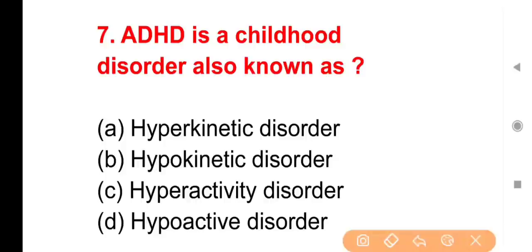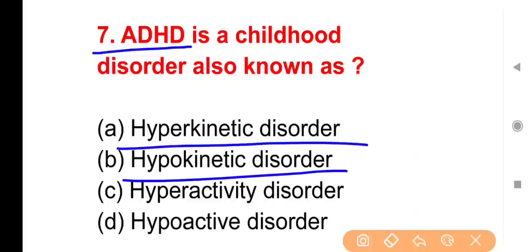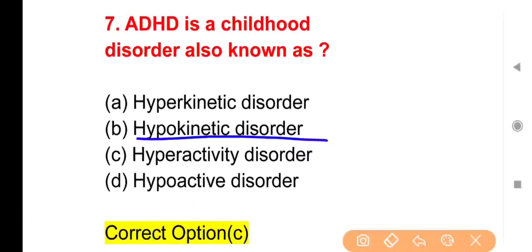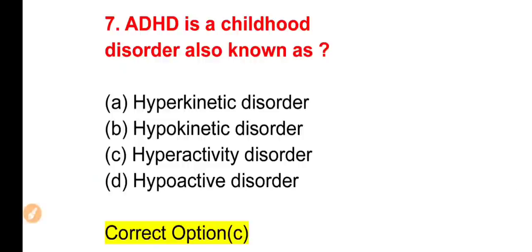Next question: ADHD (Attention Deficit Hyperactivity Disorder) is also known as — Option A, Hyperkinetic Disorder; Option B, Hypokinetic Disorder; Option C, Hyperactivity Disorder; Option D, Hypoactive Disorder. The right answer is Option C. Children with ADHD show hyperactivity — they cannot sit still and are constantly active, so it is called Hyperactivity Disorder.